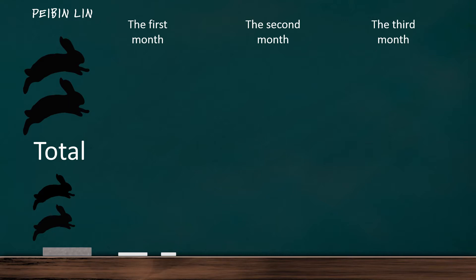So for this problem, we know that in the first month this guy adopted a pair of newborn rabbits. In other words, in the first month he has no adult rabbits, only a pair of young rabbits. So he has a total of one pair of rabbits.